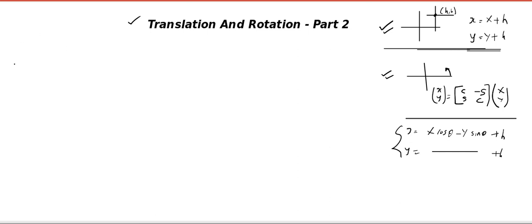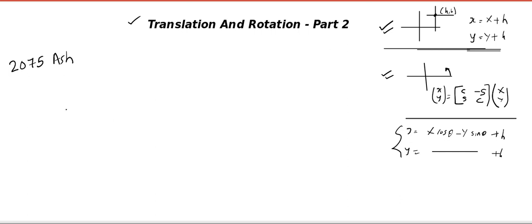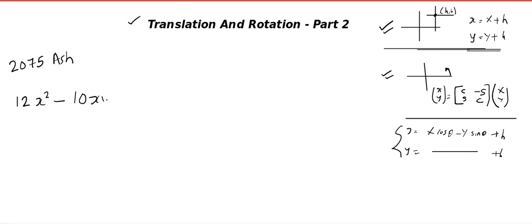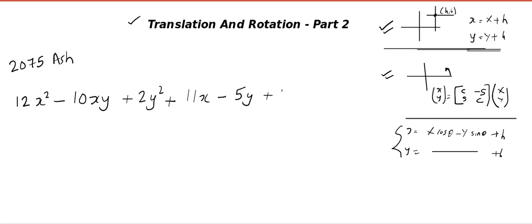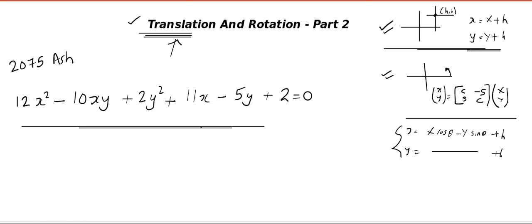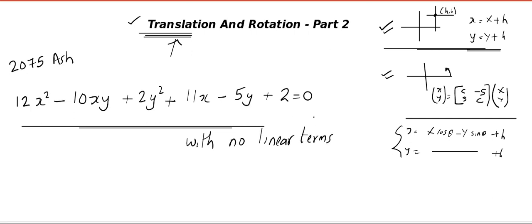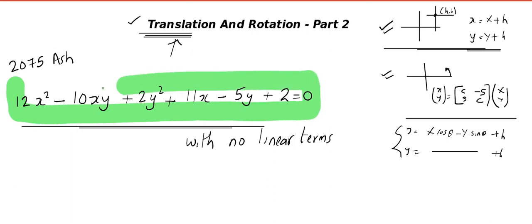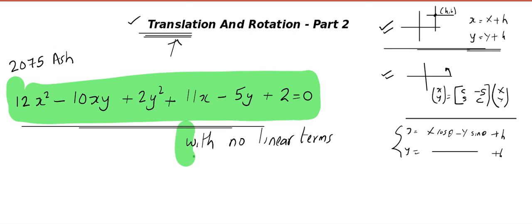The first question is from 2075, Ashwin. They are asking: transform the equation 12x² − 10xy + 2y² + 11x − 5y + 2 = 0. They want you to translate the axis — that is, find a new origin — so that this equation will be transformed into an equation with no linear terms. Linear term means a term which contains x or y to the first power.